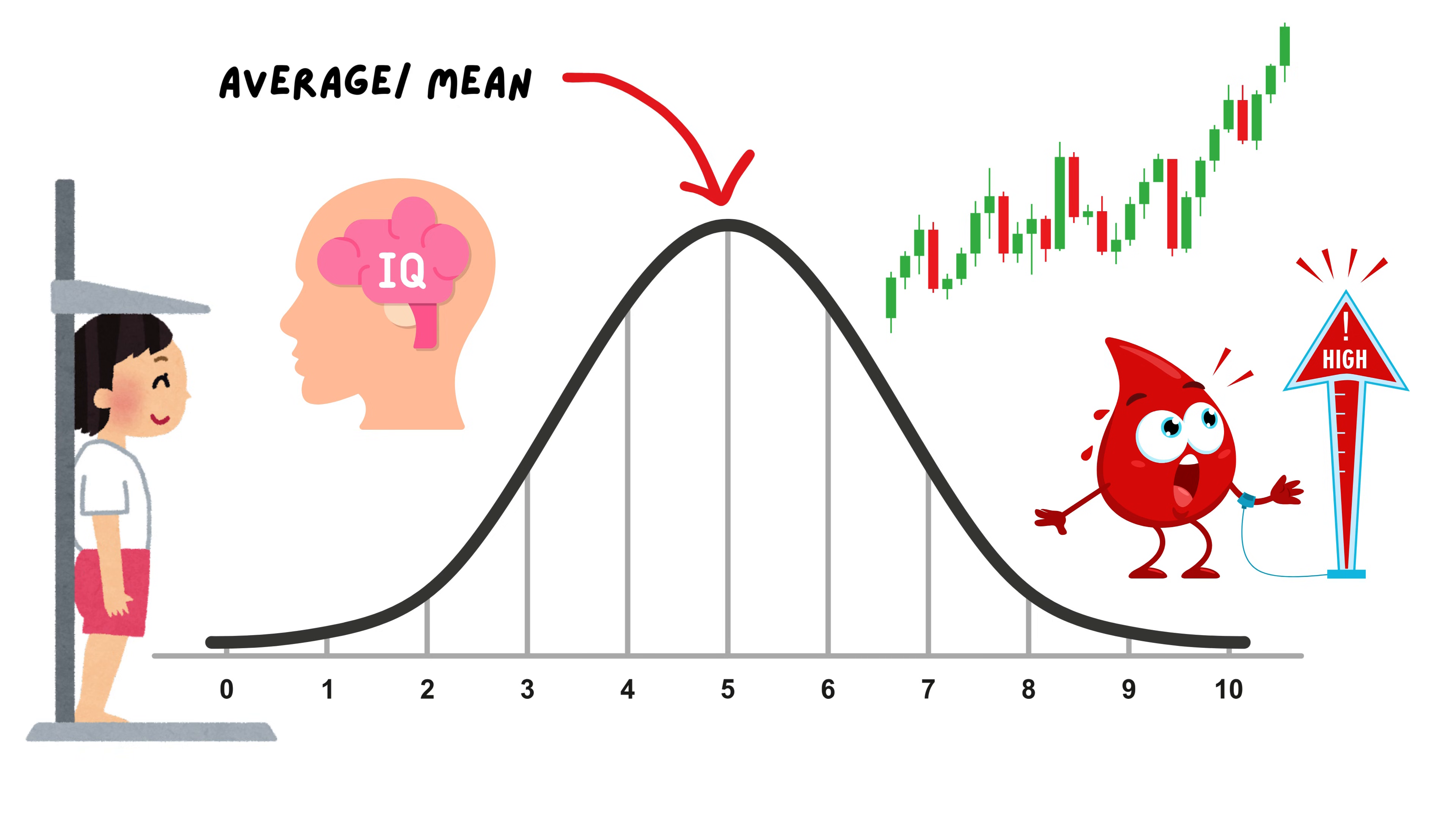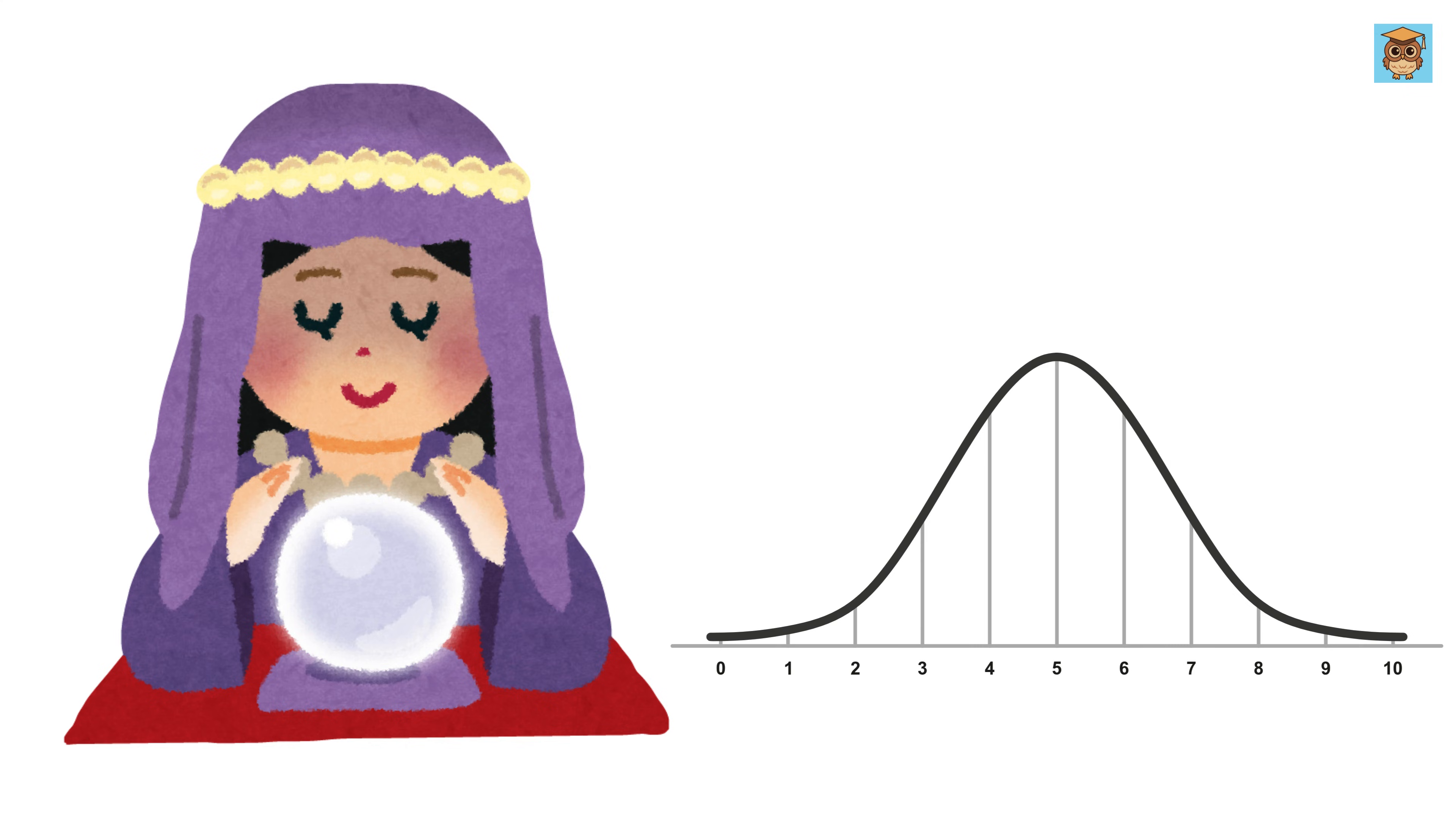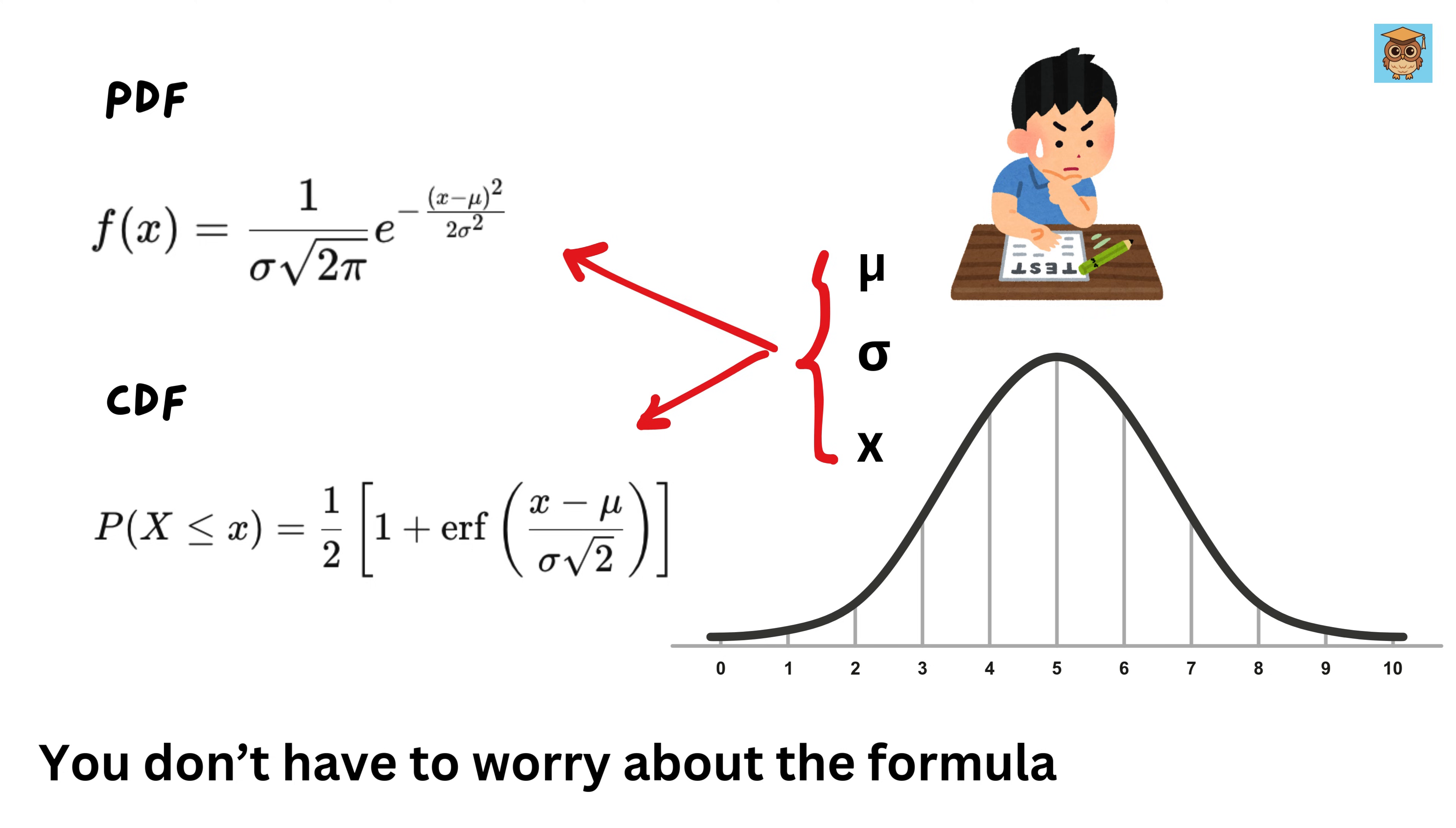Now, why is the normal distribution so useful? The reason is predictability. If we know that the class follows a normal distribution, we can estimate student performance even without seeing all the marks. This is possible because of the formula for the PDF and CDF of normal distribution. Just plug the values of X, mean and standard deviation, and we then know everything about it. So, if we somehow know the mean and standard deviation of one class which follows a normal distribution, and if we came to know that most of the class follows the same normal distribution pattern, then we can find the related statistics of any other class without knowing the individual marks of the students in other class.